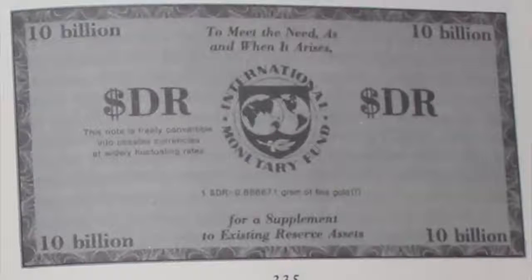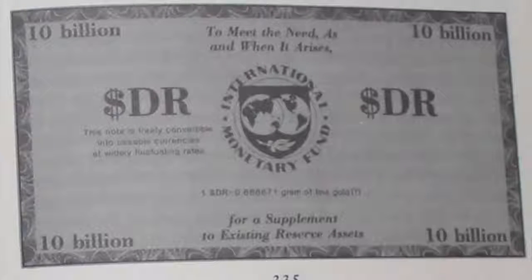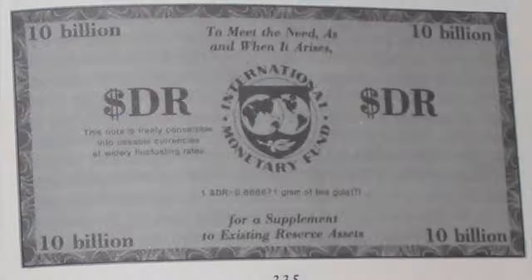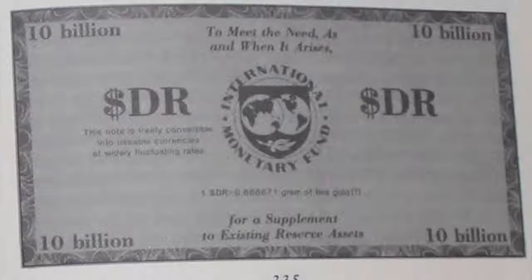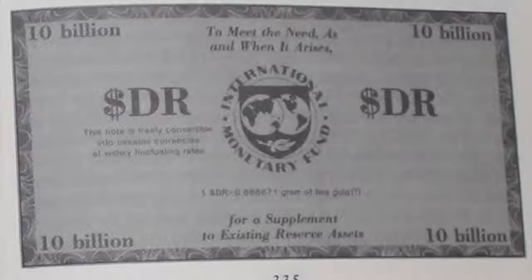The value of the original SDR in 1969 was initially defined as equivalent to 0.888671 grams of fine gold. At the time, this was also equivalent to one U.S. dollar. After the final collapse of the Bretton Woods system, with Richard Nixon's closing of the gold window on August 15, 1971, it was in 1973 that the SDR was redefined as a basket of fiat currencies.